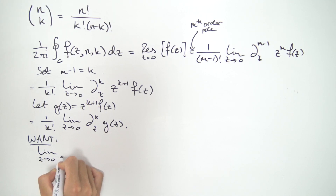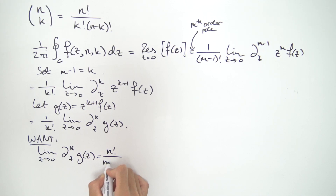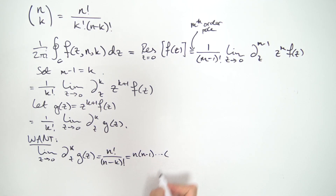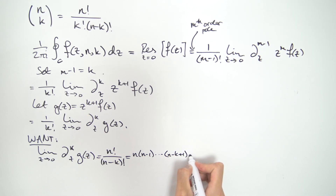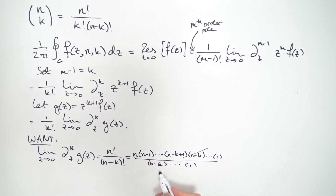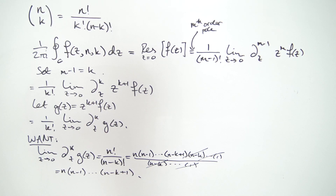Expanding n factorial over (n minus k) factorial: that's n times (n minus one) dot dot dot down to (n minus k plus one), times (n minus k) factorial on top and (n minus k) factorial on the bottom — those cancel. So we're left with n times (n minus one) all the way down to (n minus k plus one). This is some number n multiplied by successive integers going downwards toward n minus k plus one.